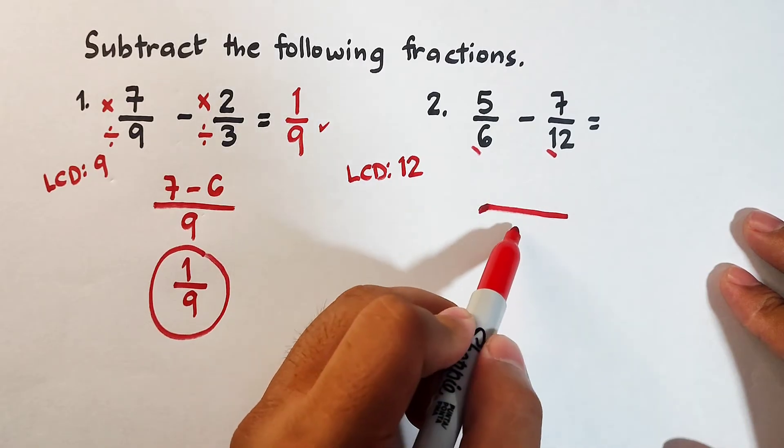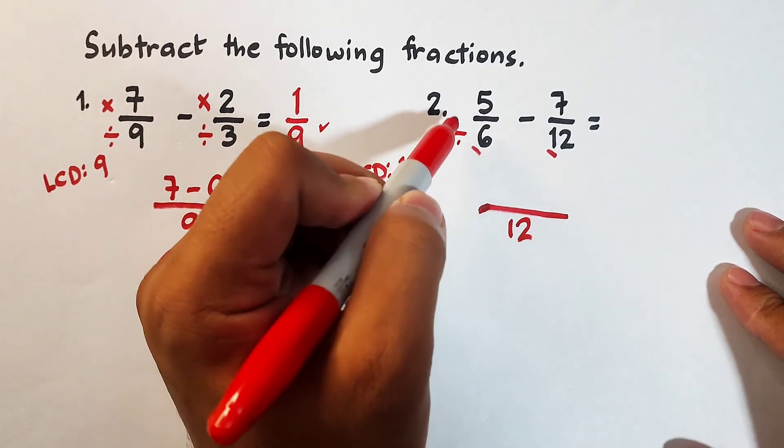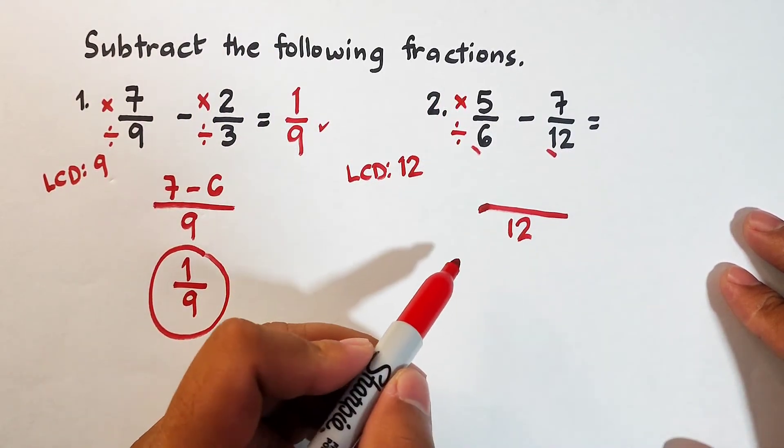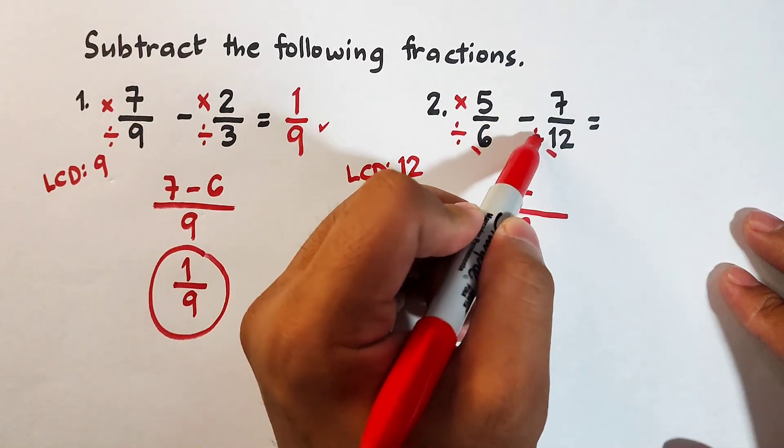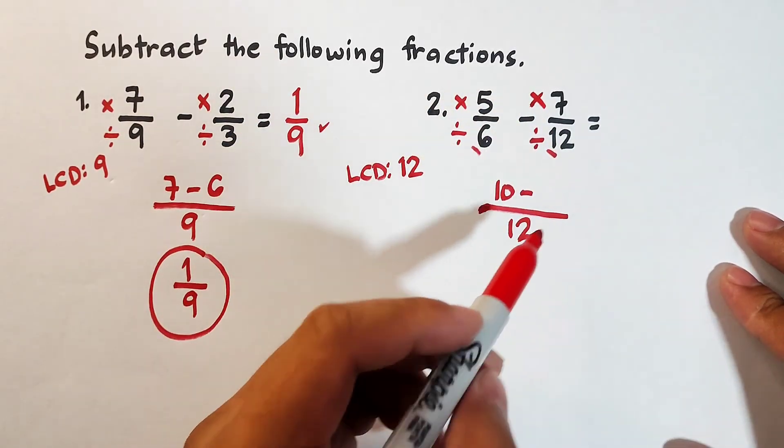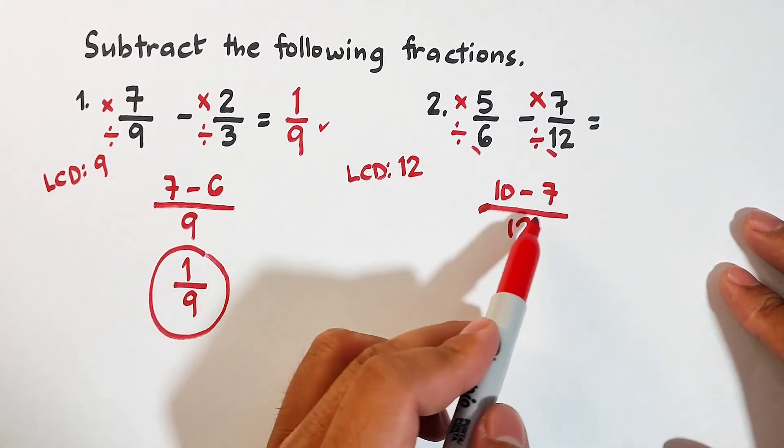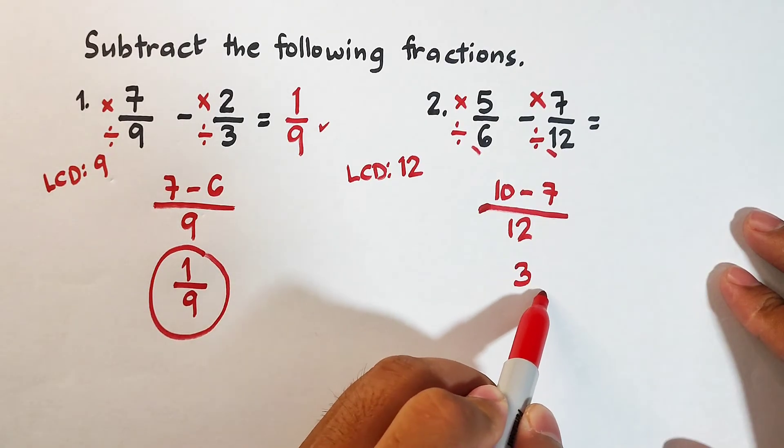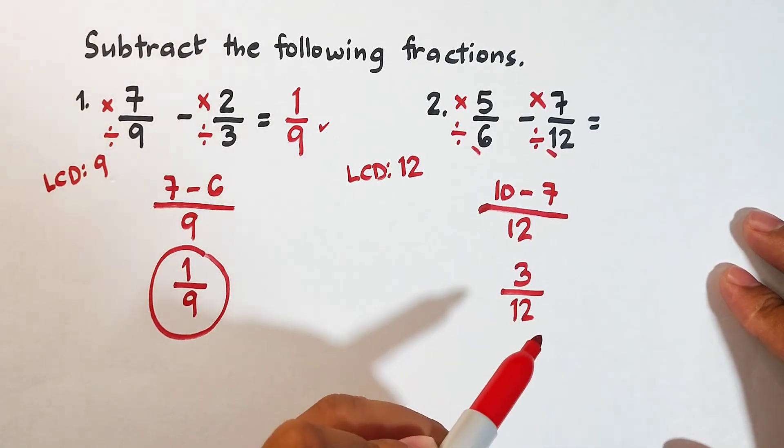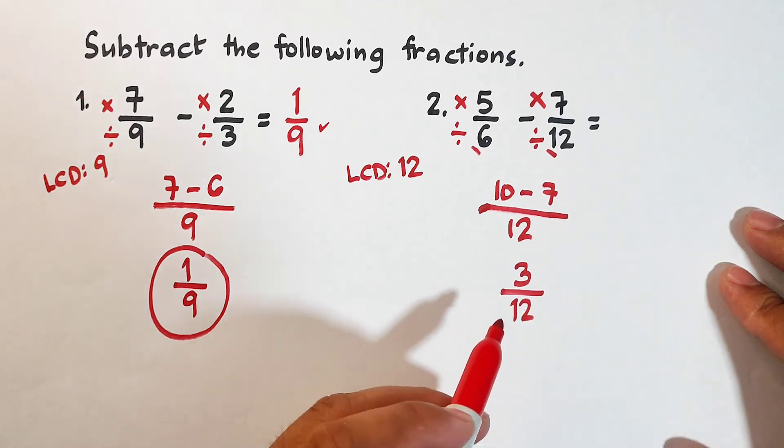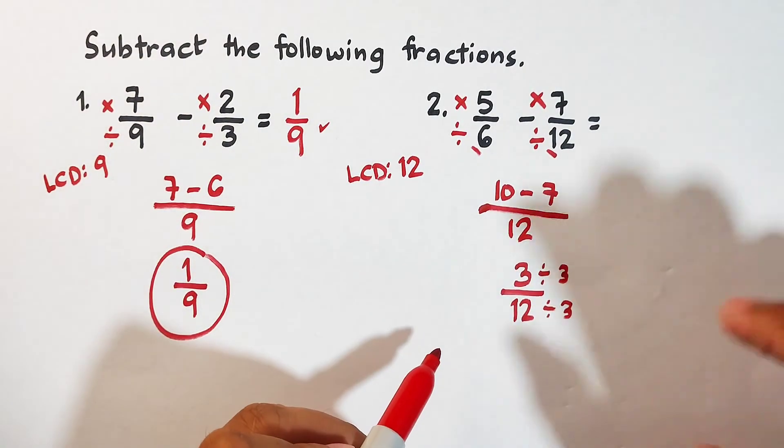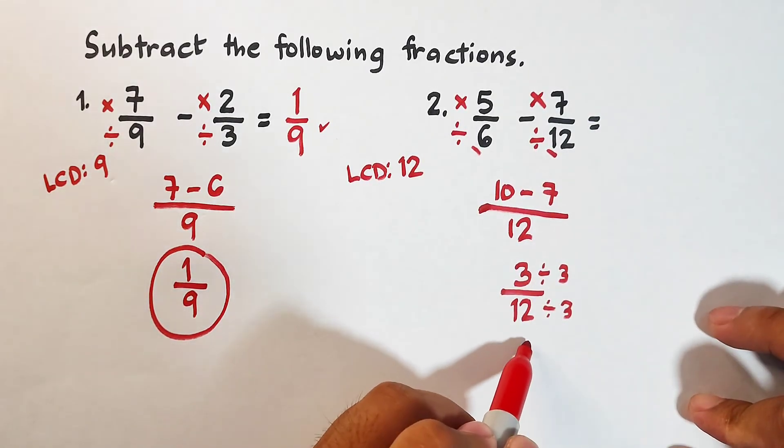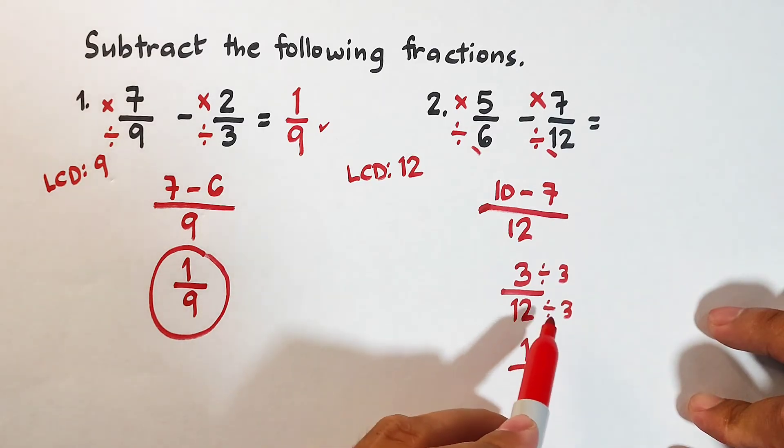We will put your 12 here at the bottom. Remember, divide, multiply. 12 divided by 6 is 2, times 5, that is equal to 10. Copy subtraction symbol. Then 12 divided by 12 is 1, times 7, that is equal to 7. Simplify your numerator. 10 minus 7 is equal to 3 over 12. This is what I said earlier, that you need to express your final answer in lowest terms. Your 3 over 12 can be simplified by dividing your denominator and numerator by 3, because this is their GCF. 3 divided by 3 is 1 over 12 divided by 3 is 4.